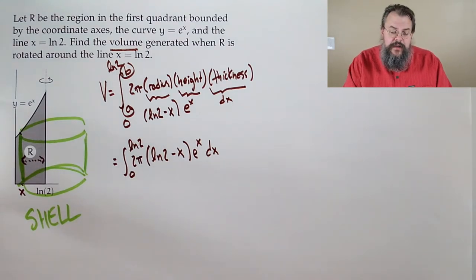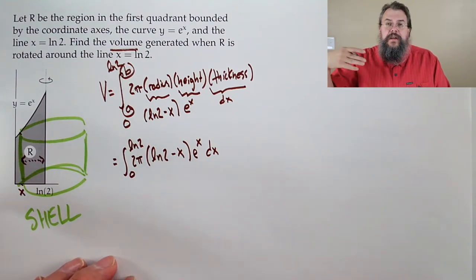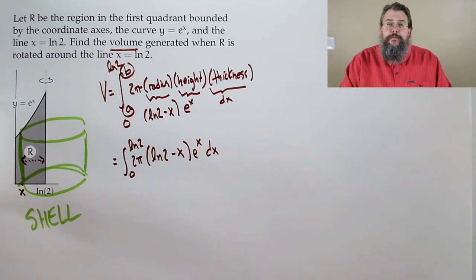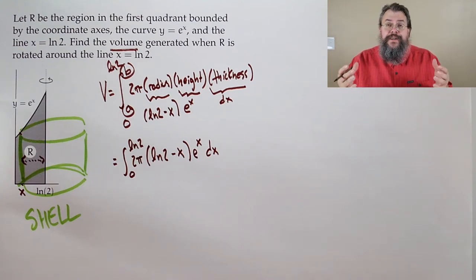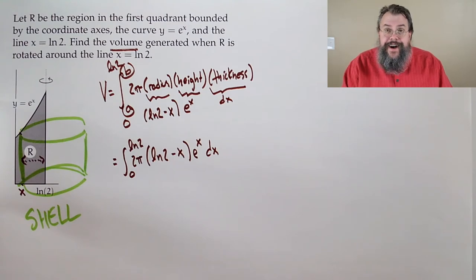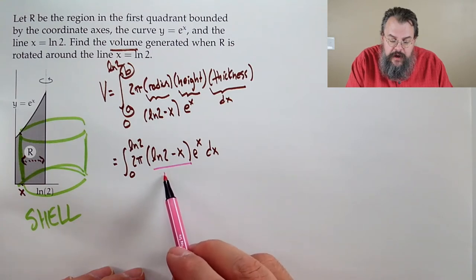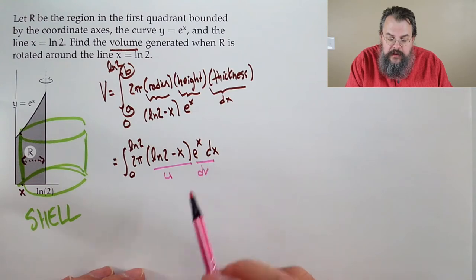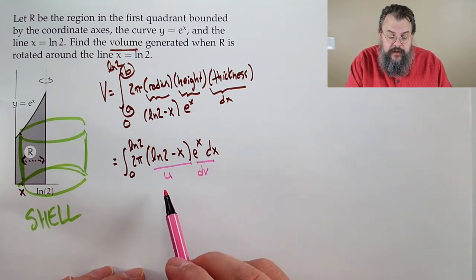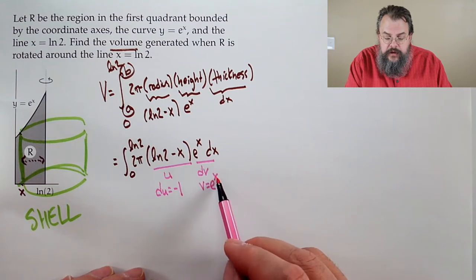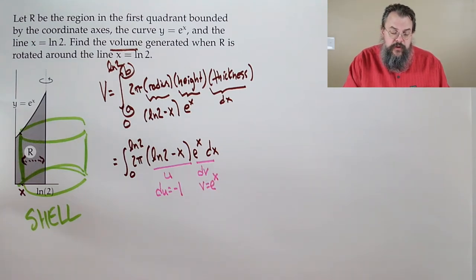This is a nice situation. If we differentiate (log 2 − x), things get better — so let's make this the part we differentiate, making e^x the part we integrate. The derivative of (log 2 − x) is negative one, and the integral of e^x is e^x. So we have 2π times [u·v evaluated from 0 to log 2] minus the integral of v·du.